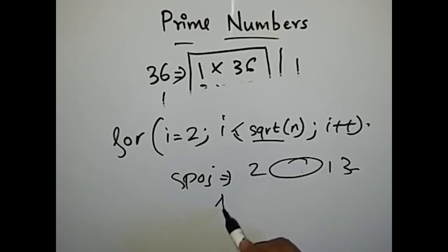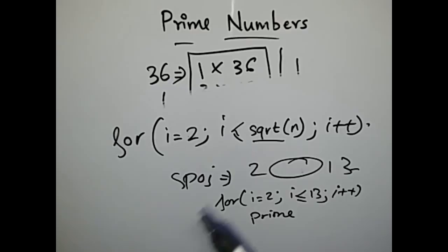And we have to find all the prime numbers between 2 and 13. So what we will do is use a for loop: for i equal to 2 to i less than equal to 13, i++. So we have to just use a for loop going from 2 to 13, and for each number we have to check whether the number is prime or not. So we wrote a function prime to check whether the number is prime or not. We have to just check whether i is prime or not.